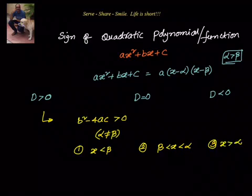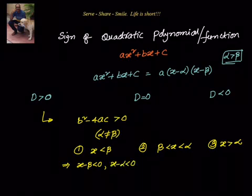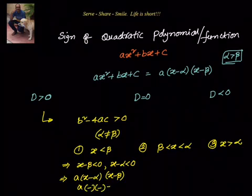In the first sub-scenario where x is less than beta, we know that x − beta is less than zero. Since alpha is greater than beta, we also know that x − alpha is less than zero. So in this case, a(x − alpha)(x − beta) becomes a times negative times negative, which equals a. So the sign of the expression will be equal to the sign of a.